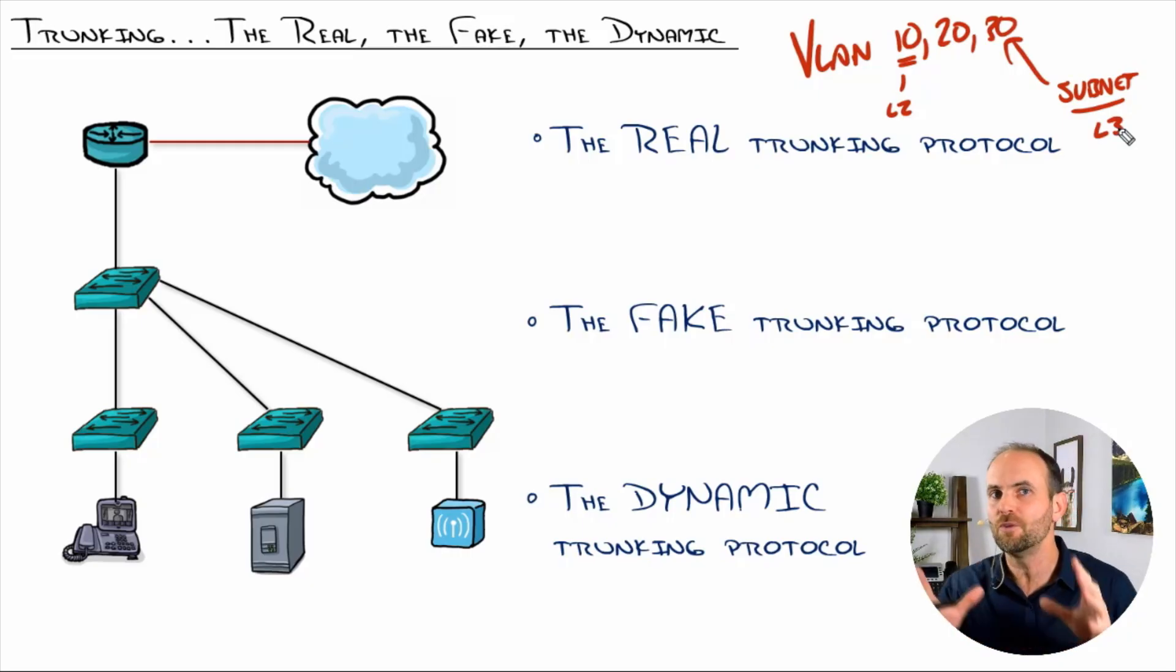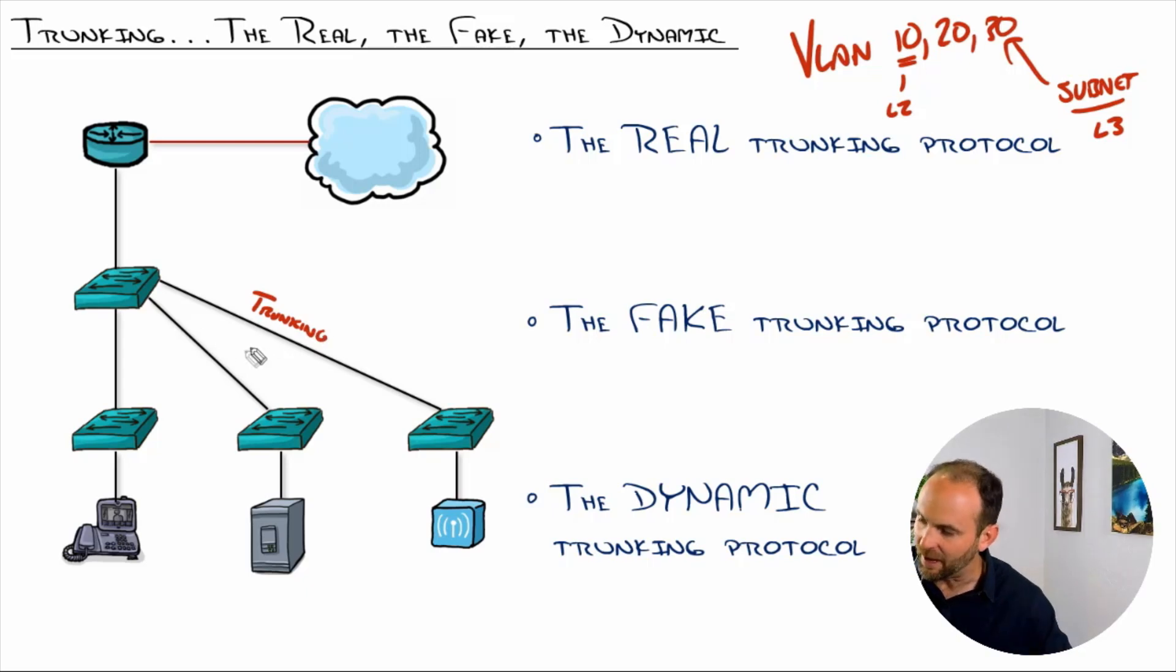Now, if we could only do VLANs on one device, that would be a major problem. It would be a major scalability limit. So what we do is enable trunking, which is actually a Cisco word, on all of these links between switches.